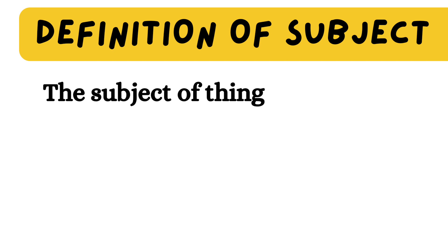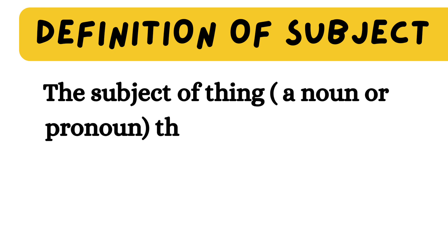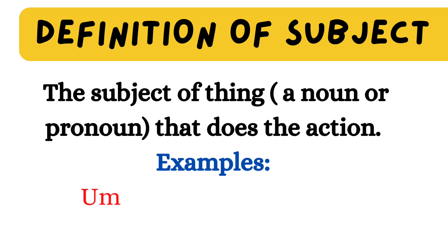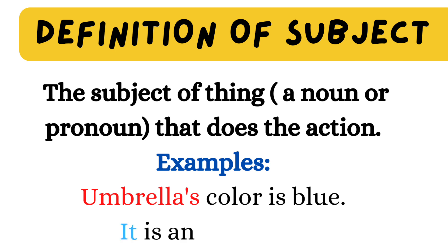Subject of thing: the thing may be a noun or pronoun. Let's take an example: Umbrella color is blue. Who is indicating the thing? Umbrella. Umbrella is the subject of thing and is a noun. It is an umbrella — here, the subject is it, and it is the subject pronoun.